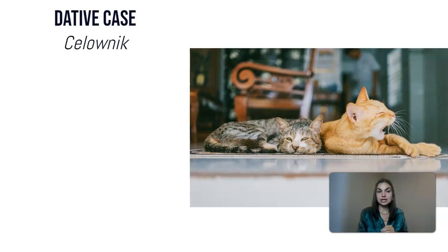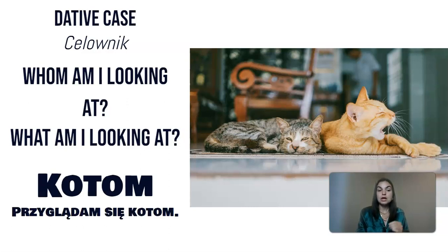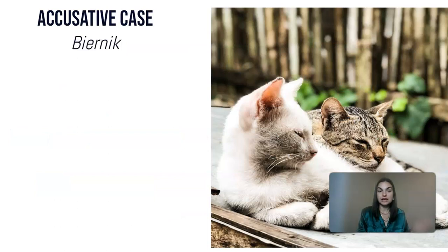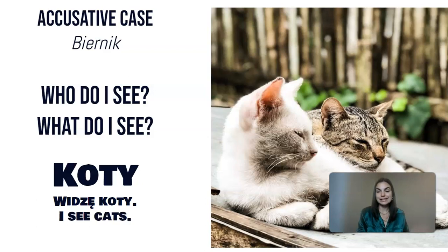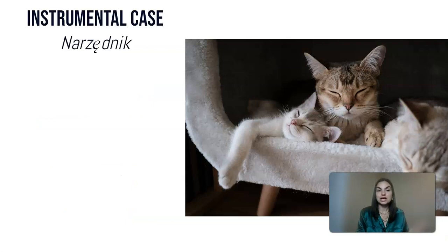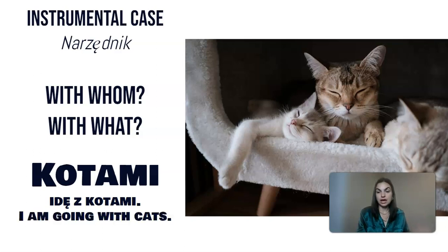The dative case, Celownik — 'who am I looking at, what am I looking at' in plural form — is Kotom. Przyglądam się kotom — I am looking at cats. The accusative case, Biernik — 'who do I see, what do I see' — is Koty. Widzę koty — I see cats. The instrumental case, Narzędnik — 'with whom or with what' — is Kotami. Idę z kotami — I am going with cats.